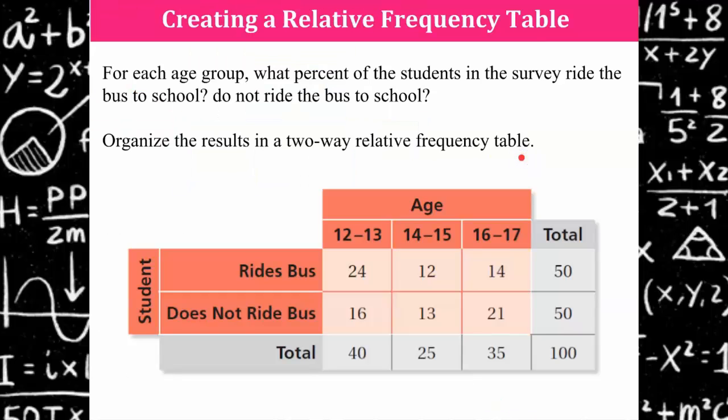Here's the table that we discovered before. We used our tallies to create this in the previous lesson and it was a survey that collected the information from three different age groups of students and whether or not they rode the bus to school or did not ride the bus to school. Now that we have our two-way table we're going to organize the results in a two-way relative frequency table which is going to display percents.